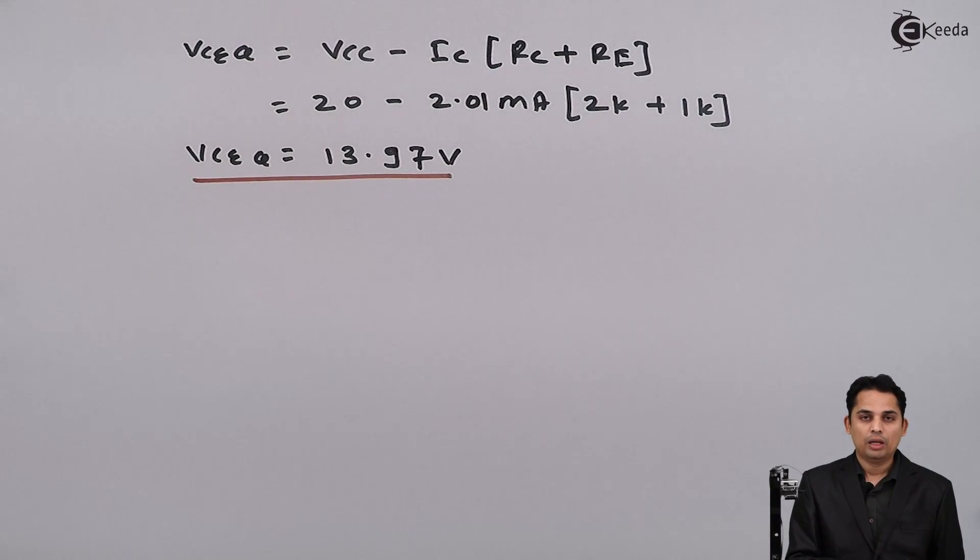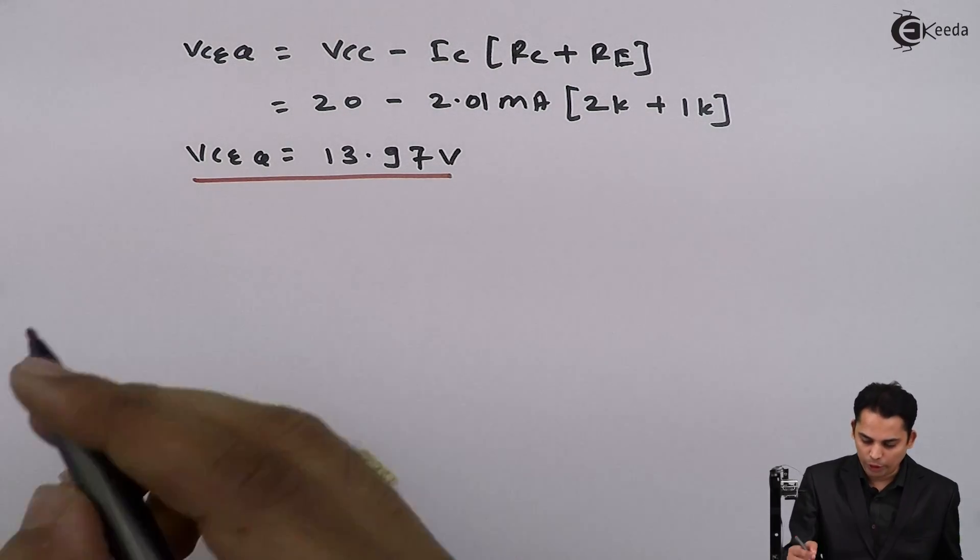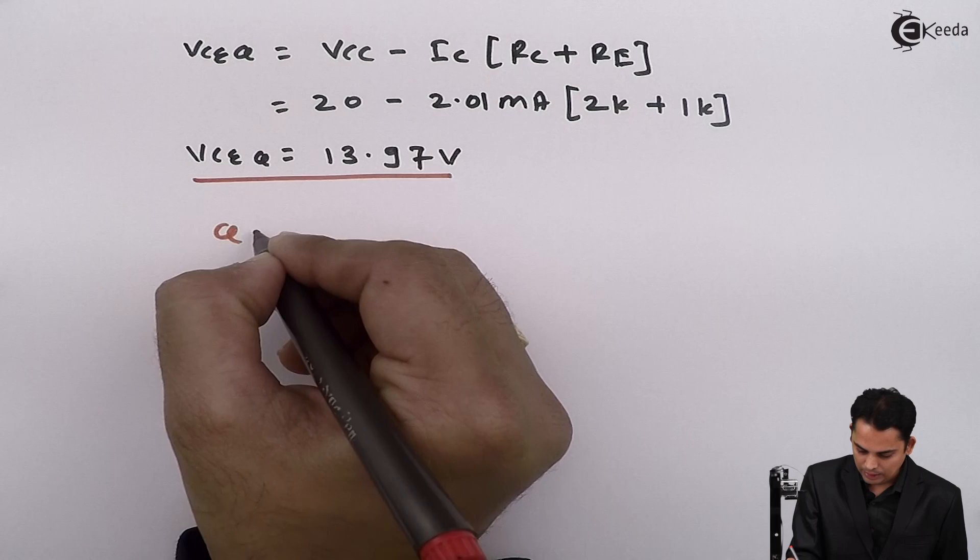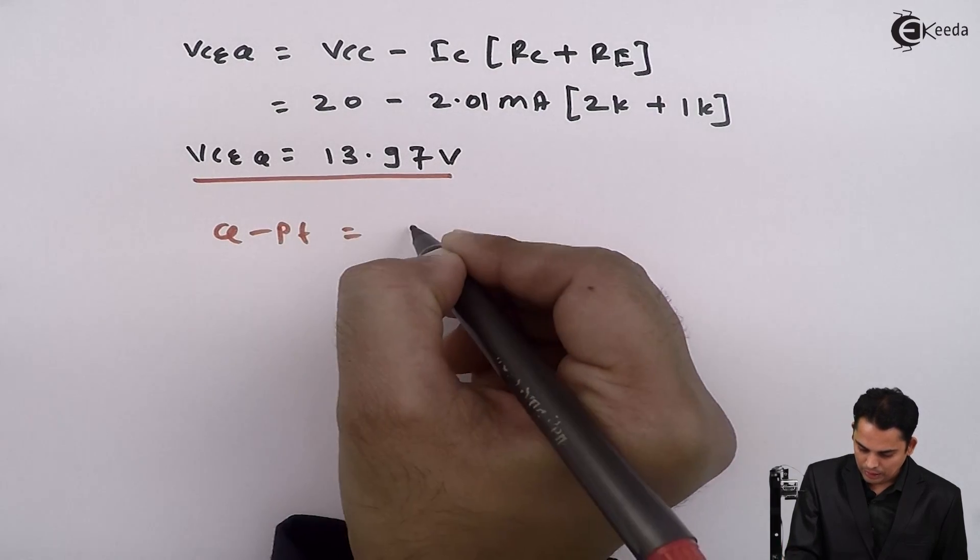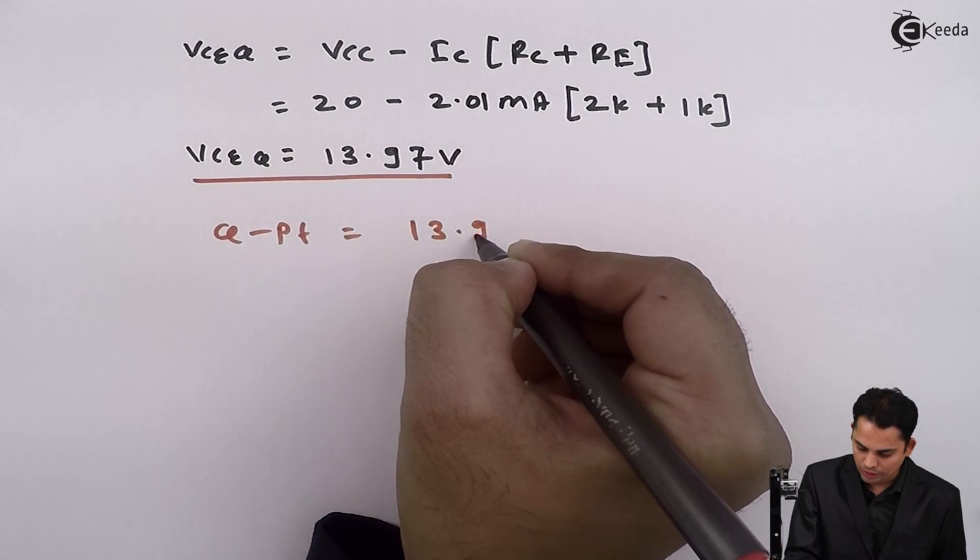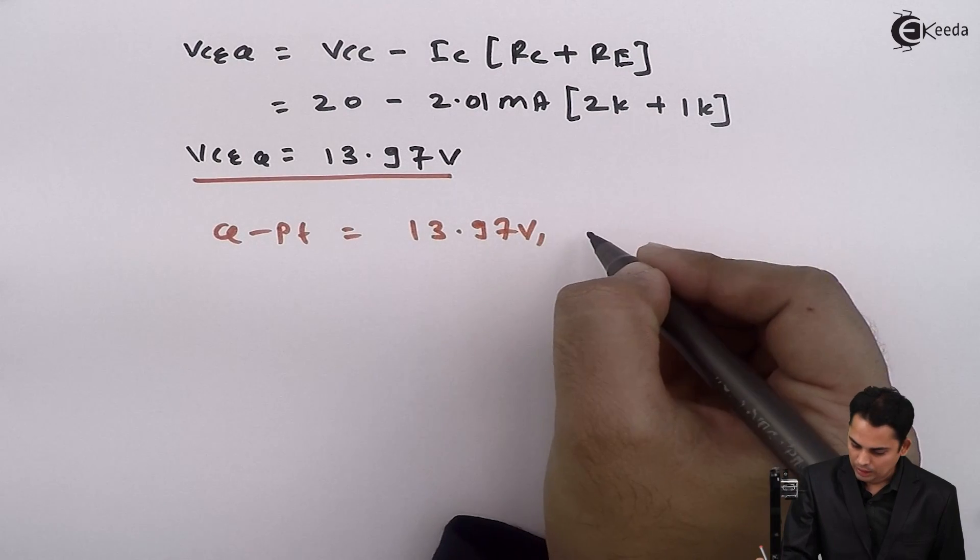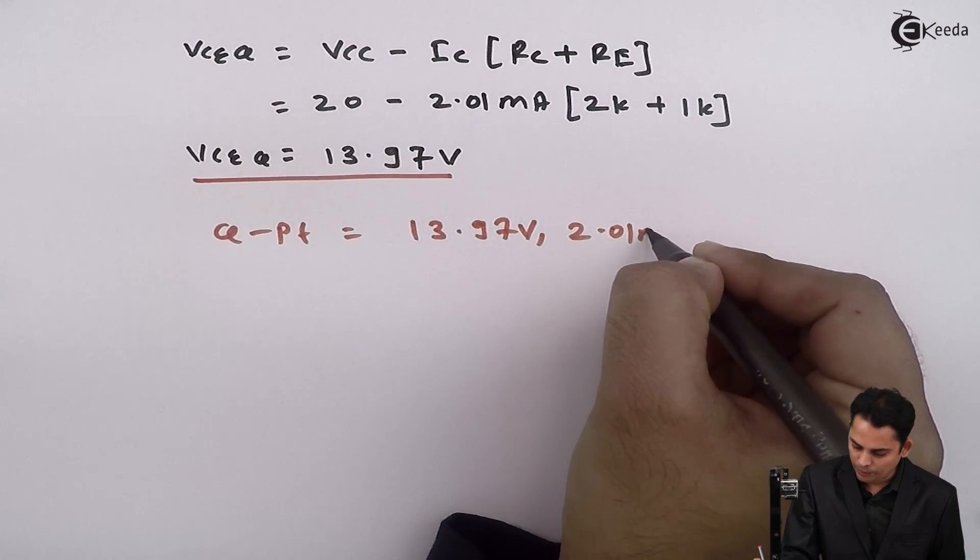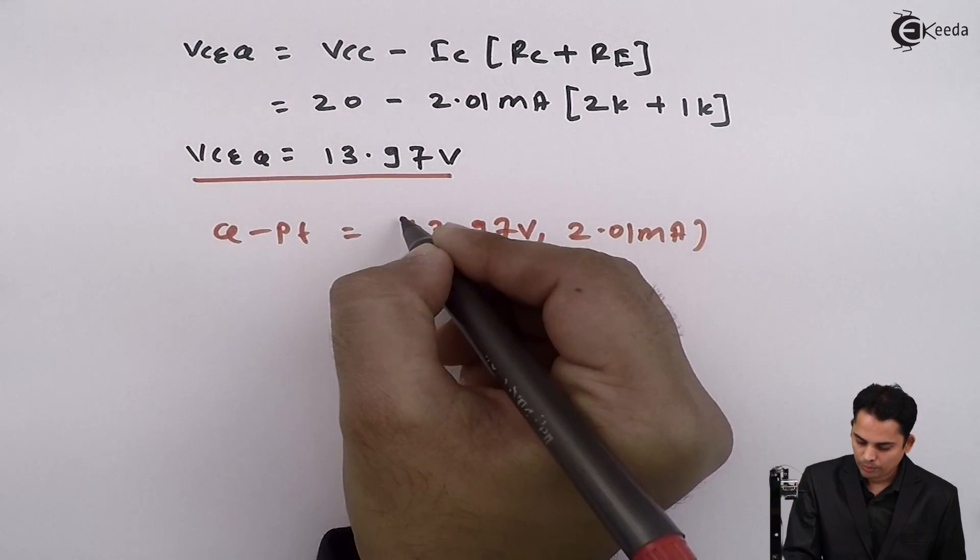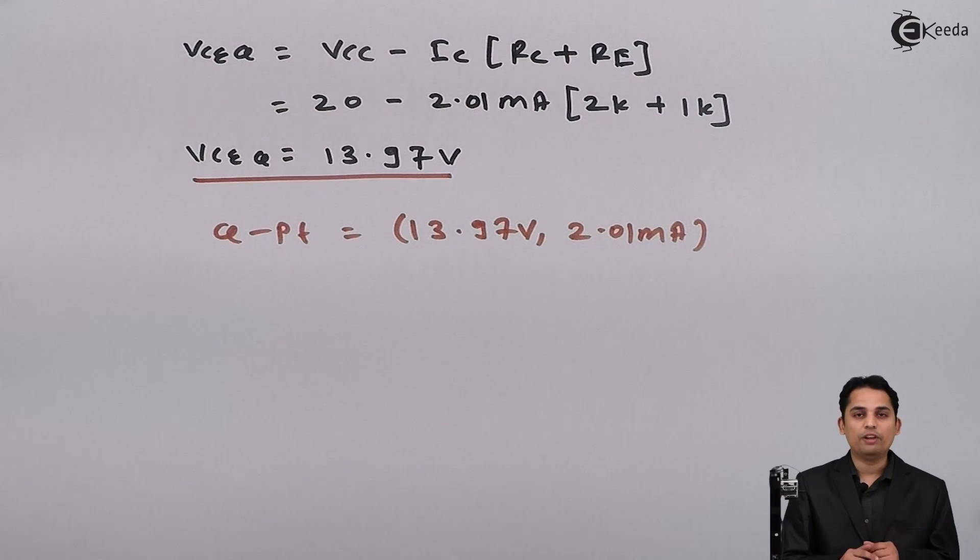Hence the Q points are VCEQ followed by ICEQ which is nothing but 13.97 comma 2.01 milli amperes. So I can write Q point as 13.97 volts comma 2.01 milli amperes. This is how we can easily calculate the Q point for fixed bias circuit. Thank you.